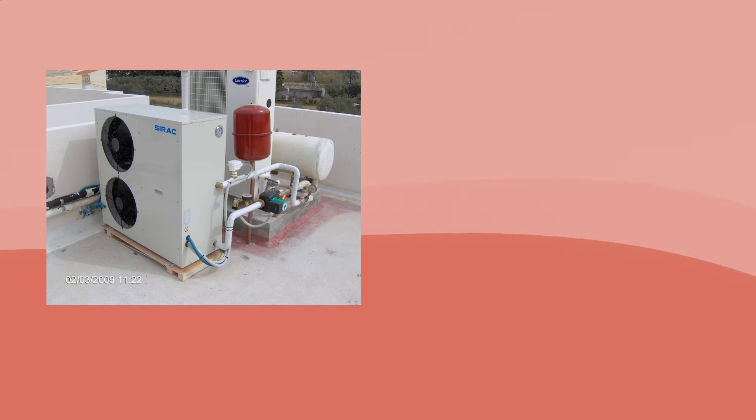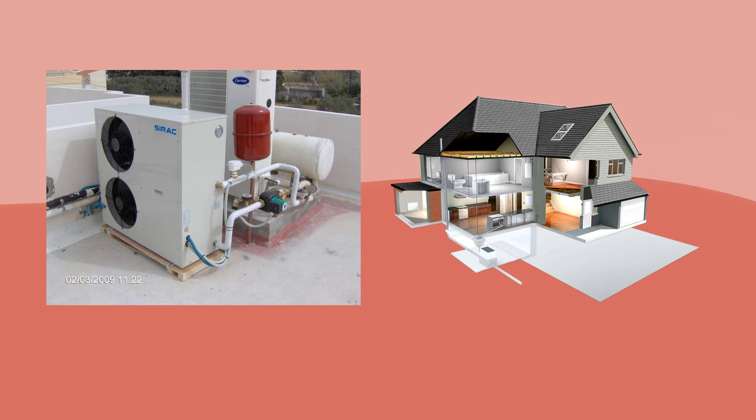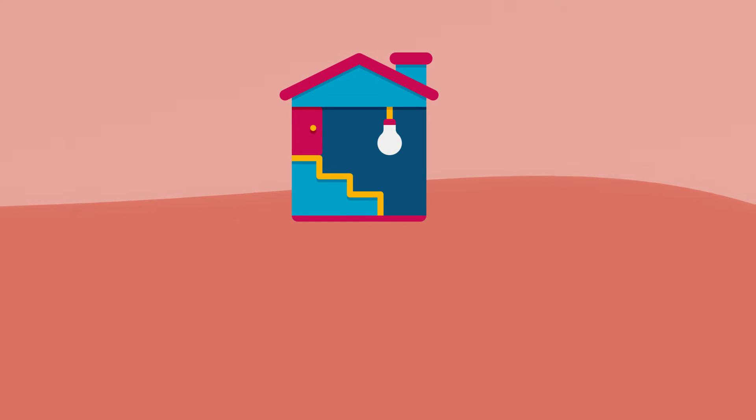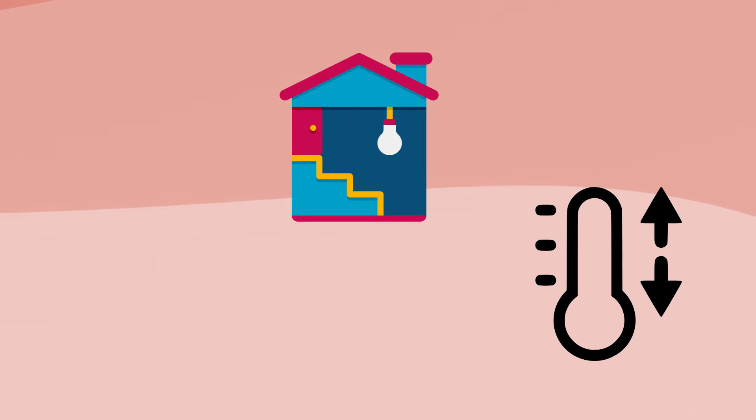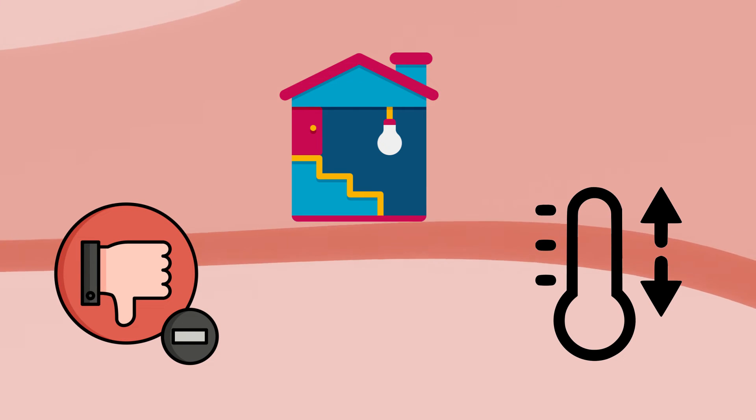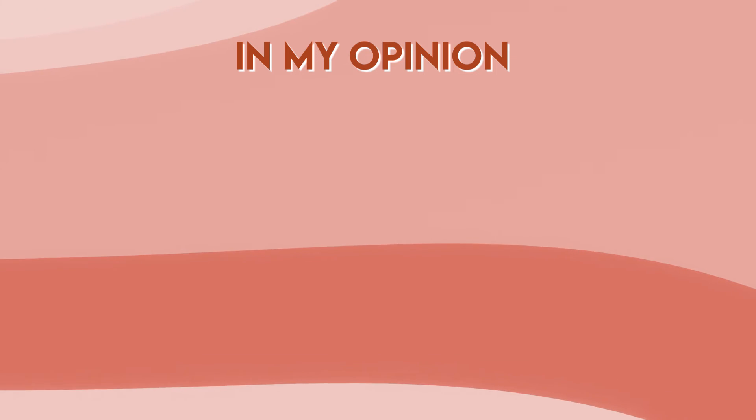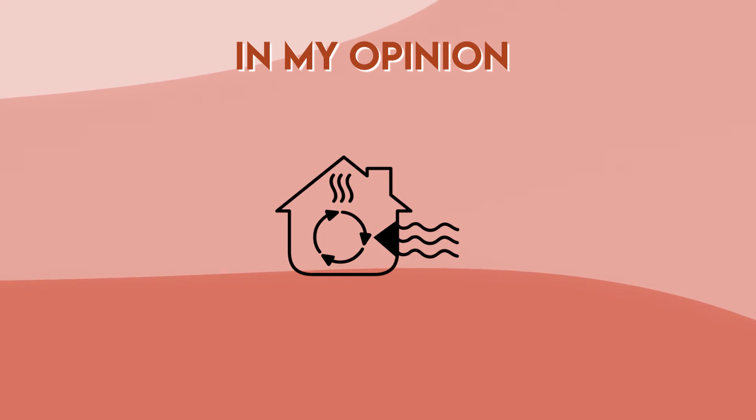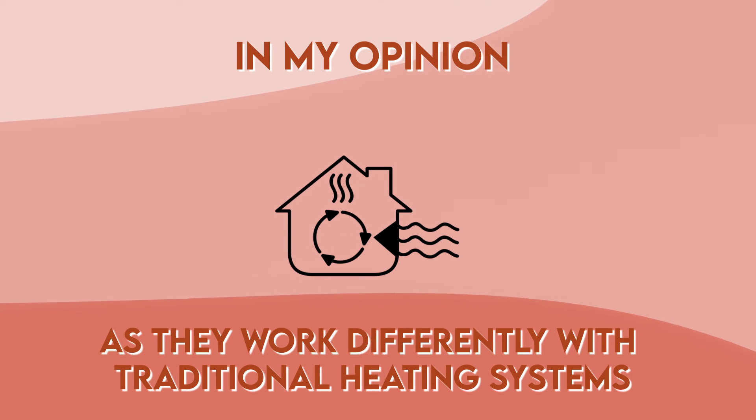That's why air-to-water heat pumps are recommended for large houses with multiple rooms. However, if you have underfloor heating, you might experience uneven heating in some rooms, which doesn't make air-to-water heat pumps so efficient. In my opinion, air-to-air heat pumps are much easier, as they work differently with traditional heating systems.